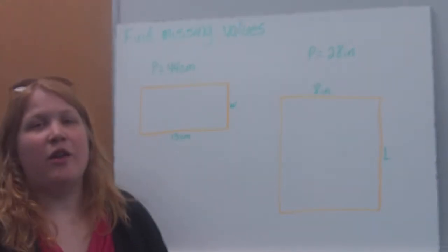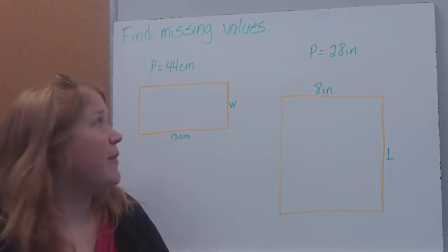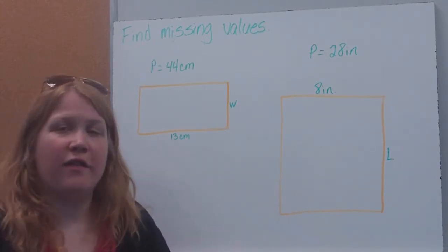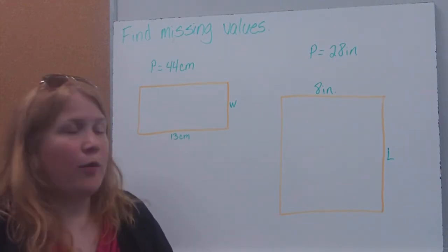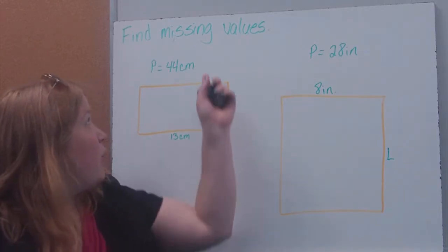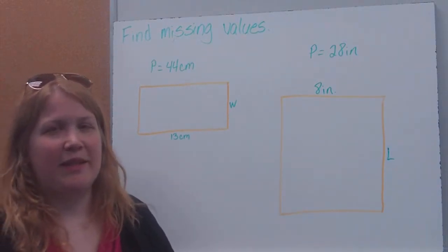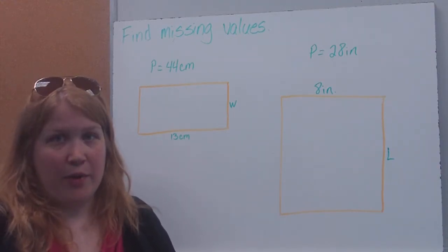So what we're going to have to do is find our missing values in formulas. What's going to happen here is instead of me giving you all of the dimensions of a rectangle and you finding the area or the perimeter or the volume, if it's a rectangular prism, I'm going to give you the perimeter and you're going to be missing something there. So now we're going to have to use what we know about solving formulas to find our missing numbers.